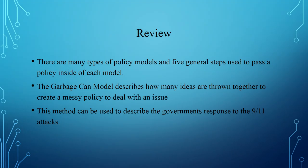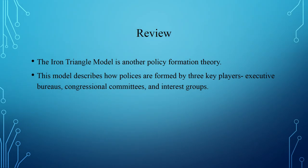In review, there are many different types of policy models and five general steps — regardless of the model — used to pass a policy. The garbage can model describes how many ideas are thrown together creating a messy, vague policy, and can be used to describe the government's response to the 9-11 attacks. The Iron Triangle model describes how policies are formed by three key players — executive bureaus, congressional committees, and interest groups — though it doesn't account for outside influences. This concludes the presentation on policy models. Thank you.